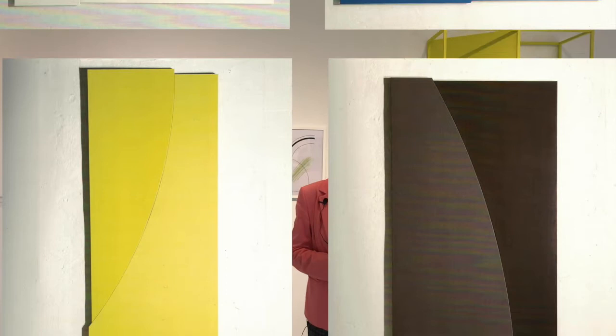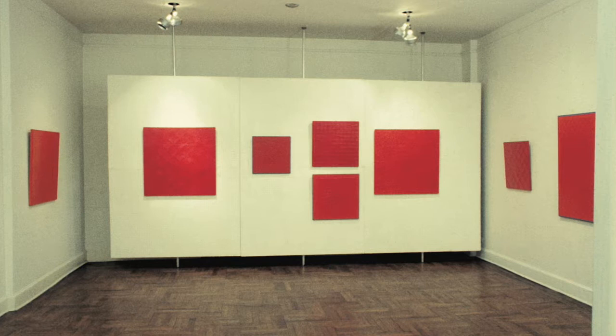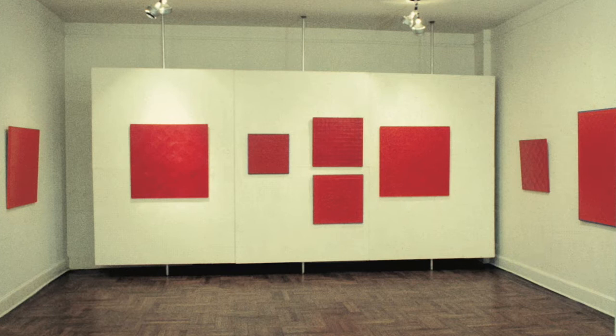Diese Tableau Reliefs weisen schon auf etwas hin, was vielleicht viel wichtiger wird, nämlich, dass das Bild nicht zweidimensional ist – Tableau Relief – sondern eben dreidimensional wird, also in den Raum hineingeht. Er hatte damals ganz viele Flächen von Karton sozusagen auf die Leinwände aufgeklebt, meistens viereckige Flächen, rechteckige, ganz selten dreieckige.